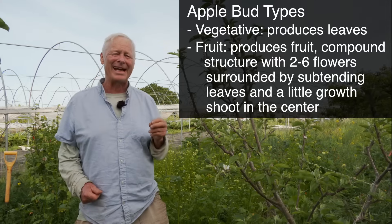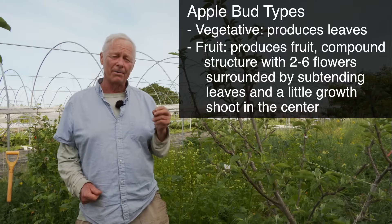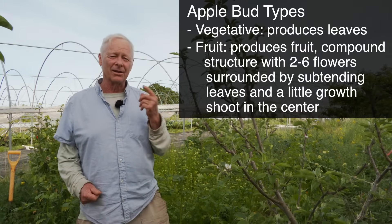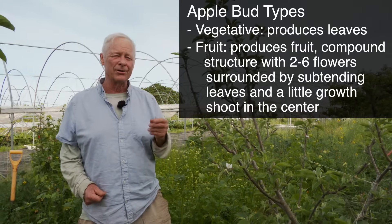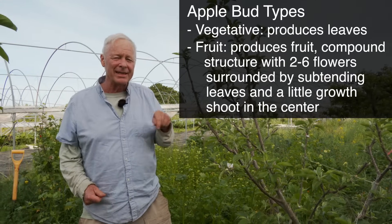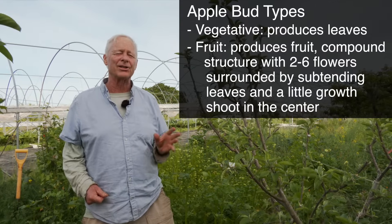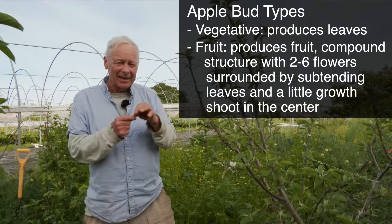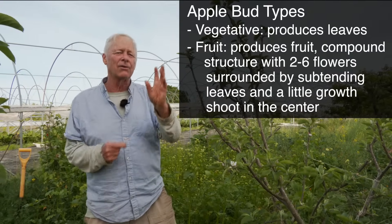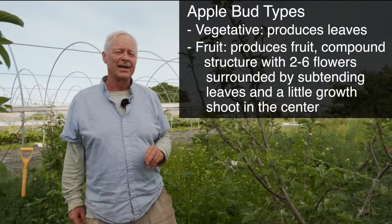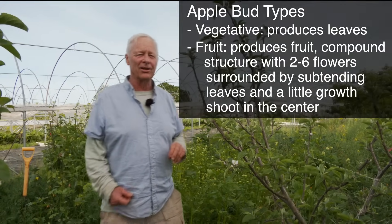So a compound bud in an apple or a pear has a cluster of flowers, subtending leaves — they're smaller than the branch leaves — and a little growth shoot. That's the deal. So let's take a look.